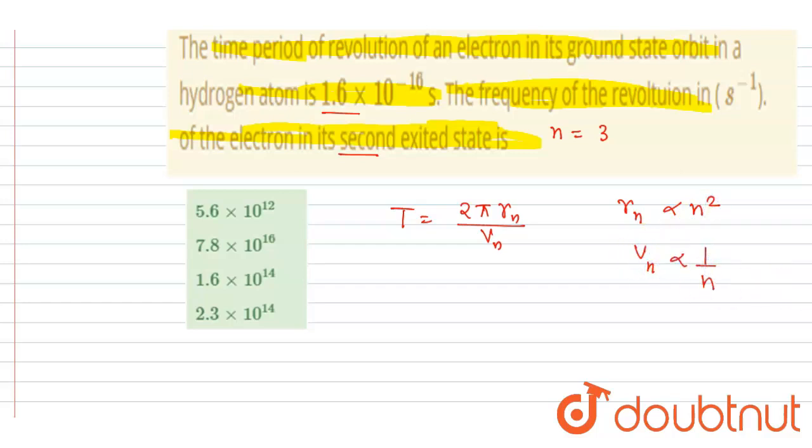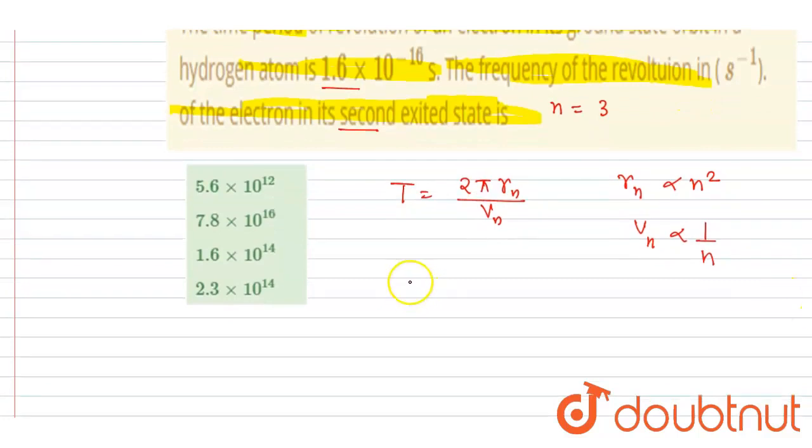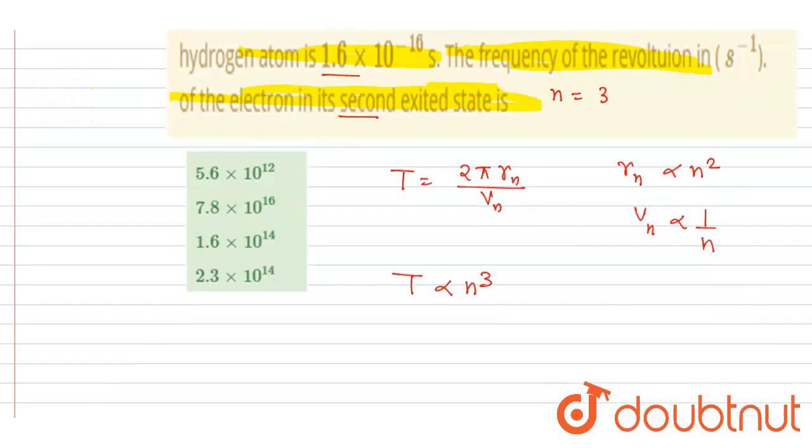So basically you got this T is proportional to n cube. T is proportional to n cube and you changed the n here. Initially the electron was in ground state, now it is in second excited state.